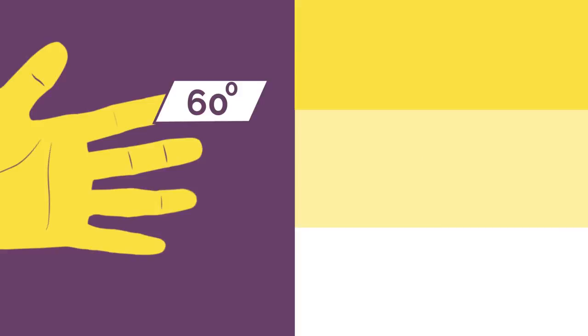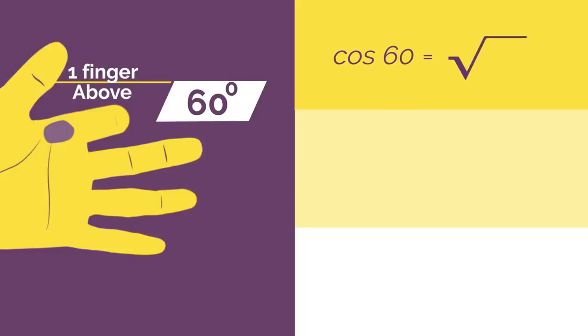So for cos 60, bend down your 60 finger and count the fingers above, 1. So cos 60 is square root 1 divided by 2, which simplifies to a half.